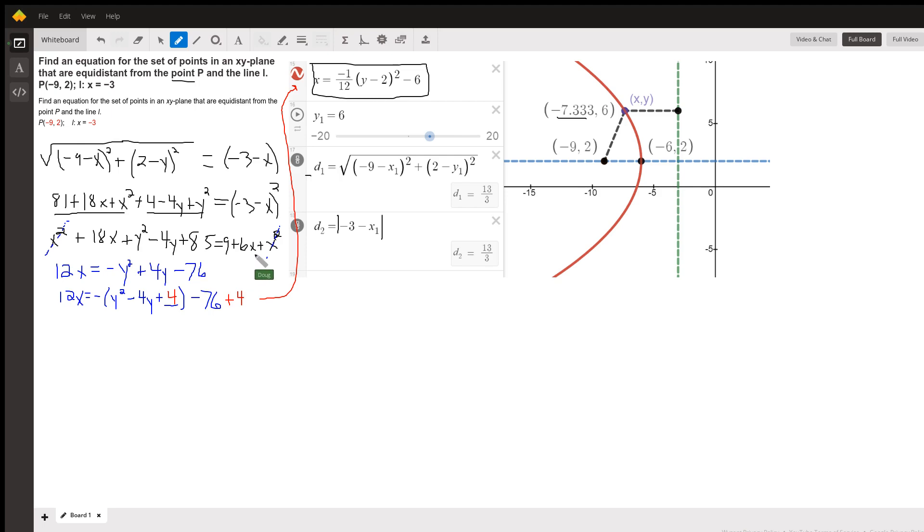I can get x on one side of the equal sign. So I have 18x minus 6x gives me 12x. Move all other terms to the right side of the equal sign. I get -y squared plus 4y. Move the 85 over. Subtract 85 from both sides. I get -76.